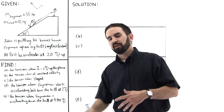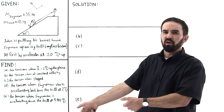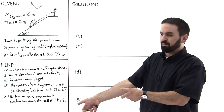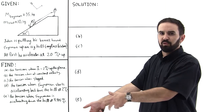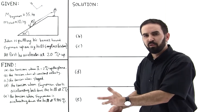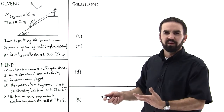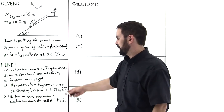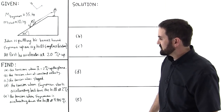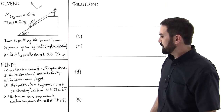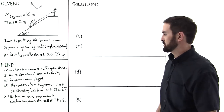In Part D, we're asked to find the tension when Feynman starts accelerating back down the hill at 2 meters per second squared. John is still holding on so the rope is burning his hands as it goes through — he is exerting a force, which will be the tension, but we don't know what it is. In Part E, we find the tension when Feynman's accelerating down the hill at 4.905 meters per second squared along the plane.